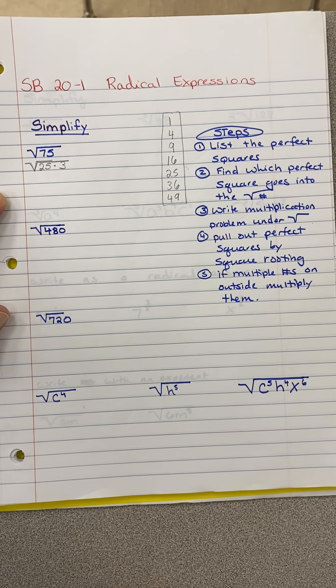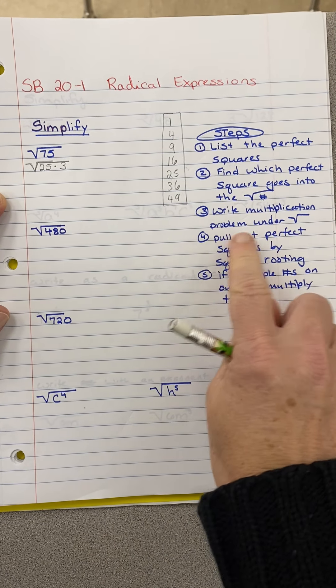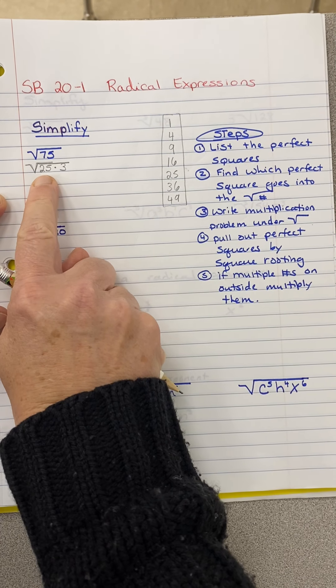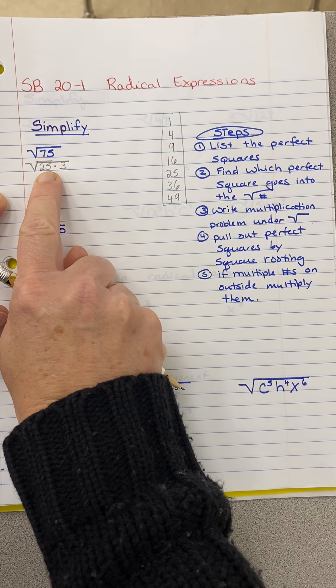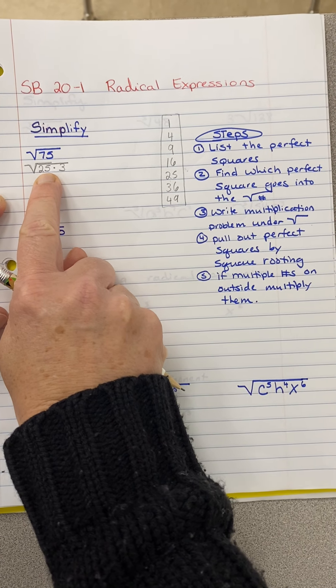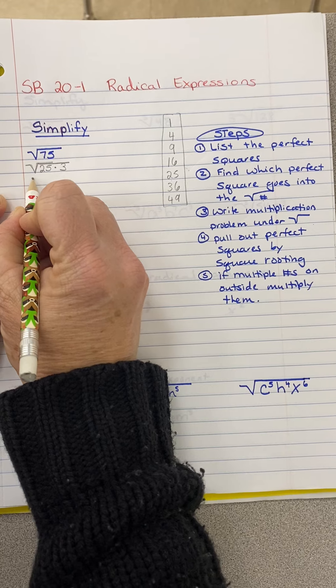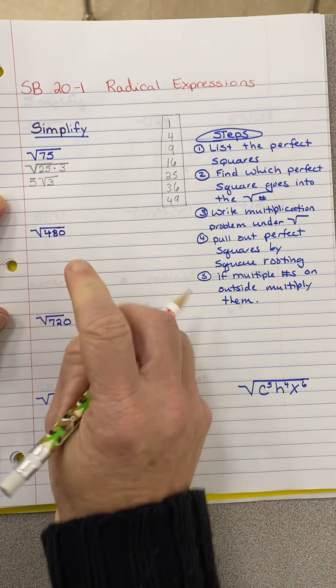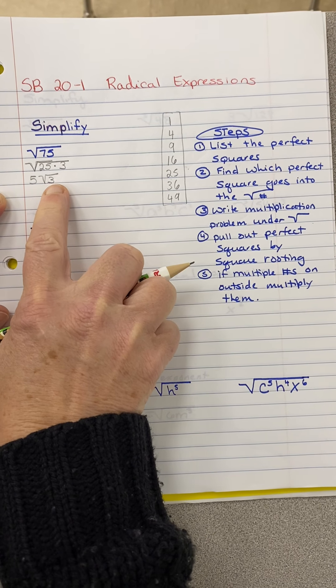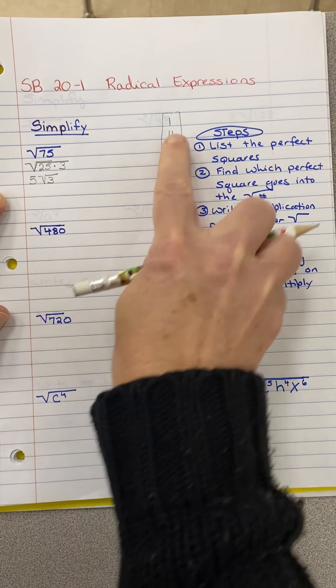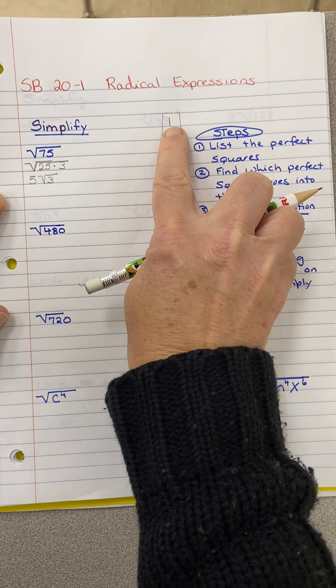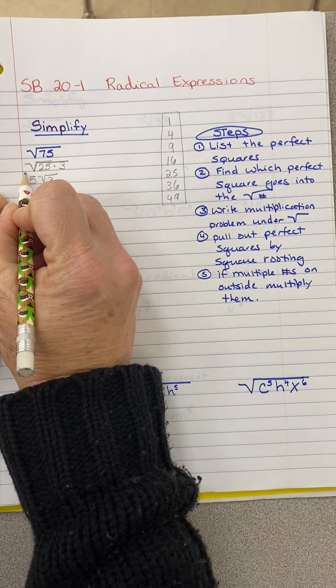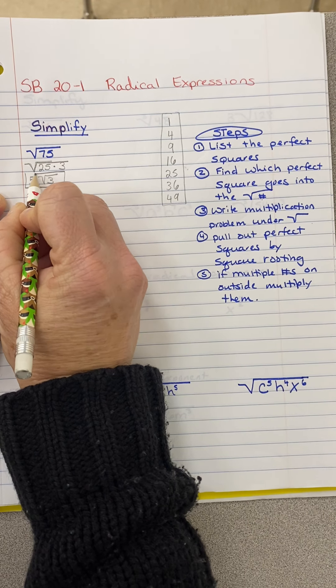So at that point, now I'm on step four. Pull out the perfect square. So what is the square root of 25? Well, the square root of 25 is five because five times five is 25. So I'm going to pull out the 25 and then I keep that three under the radical. Now I always like to double check. Does something else go into this three? Anything on this list? No, it does not. That doesn't help us get any further. So our answer is five radical three.